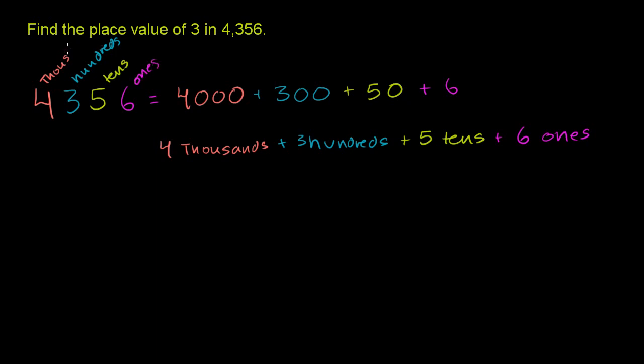When they ask what is the place value of 3 in 4,356, we're concerned with this 3 right here. Its place value is in the hundreds place. If there was a 4 here, that would mean 400; if there's a 5, 500. It's the third from the right: the ones place (6 ones), tens (5 tens), hundreds (3 hundreds). So the answer is it's in the hundreds place.